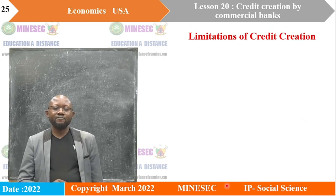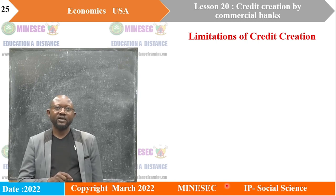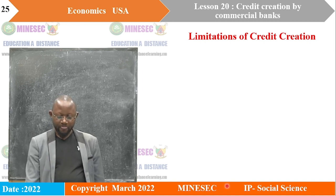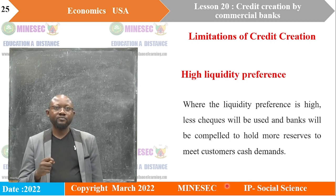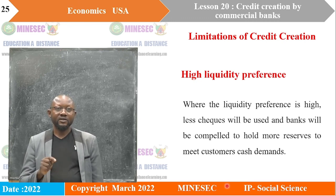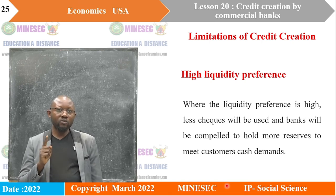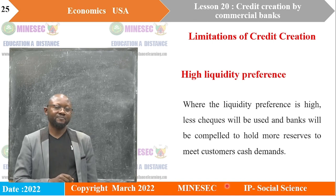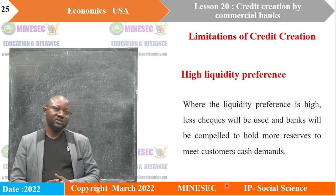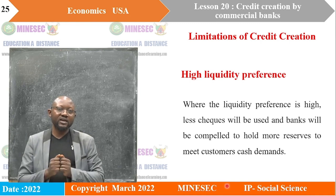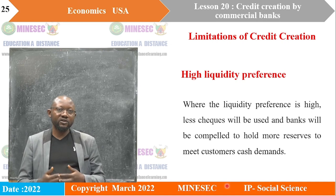Let's look at the limitations of credit creation. First, high liquidity preference — the desire for the public to hold cash. When liquidity preference is high, fewer checks will be used, and banks will be compelled to hold more reserves to meet customers' cash demands. When banks are required to hold more reserves, less excess reserves are available to grant loans, and since it is through granting loans that credit is most easily created, credit creation is limited.